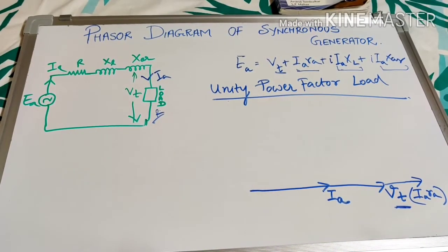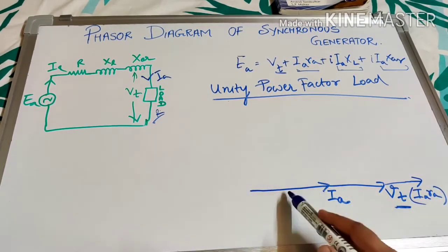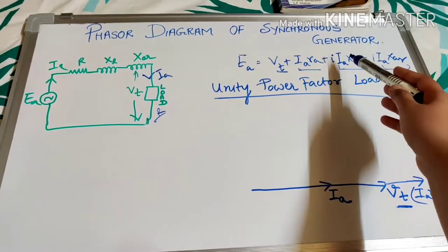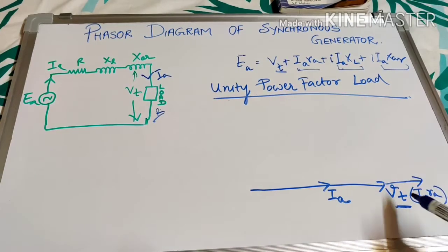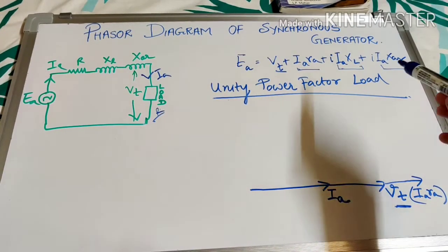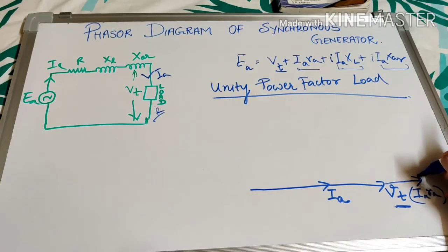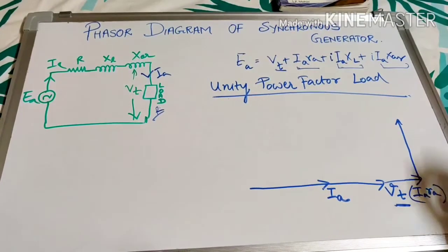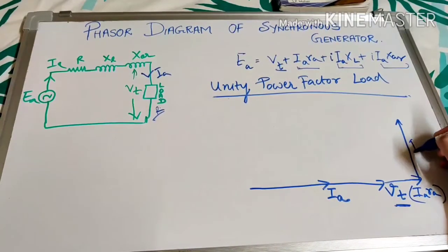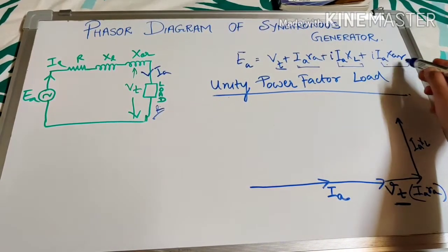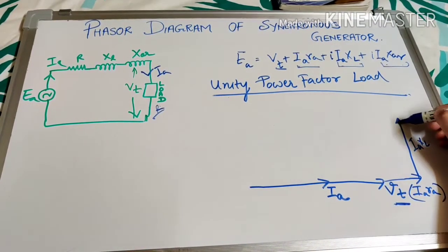The voltage drop in resistance IaRa is in the current direction, so it adds directly along the phasor. However, for inductance, the voltage drop is 90 degrees ahead. So IaXl is drawn perpendicular (90 degrees) to the current direction. Similarly, IaXar is also drawn in the same perpendicular direction.